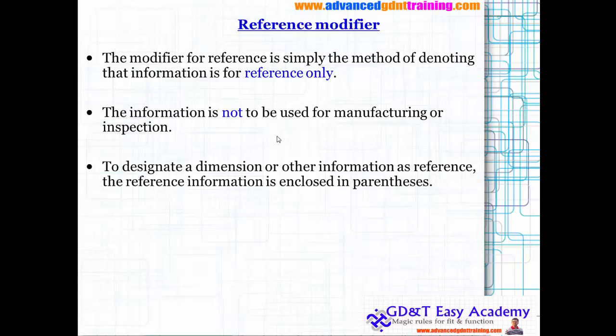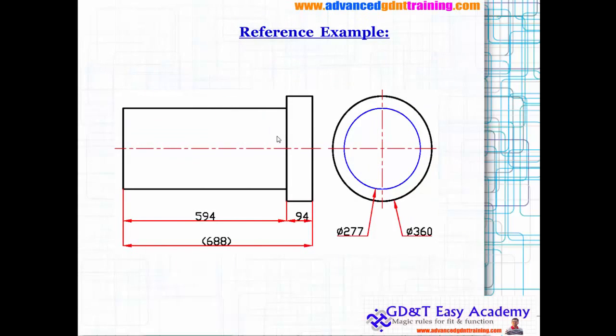Next we will look at the reference modifier. Many times we use the reference modifier for interpreting and understanding additional information only for reference sake, and this information is not used for manufacturing or inspection purposes. It is used for designating a dimension or other information as referenced, and these are enclosed in parenthesis.